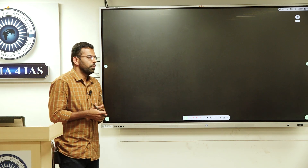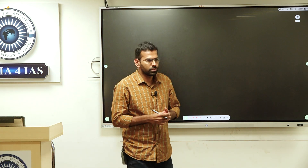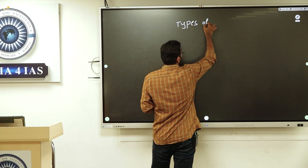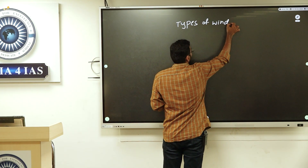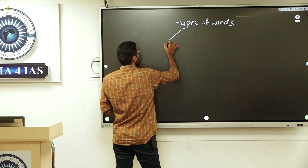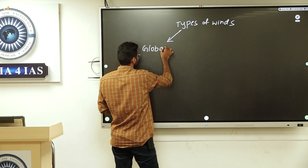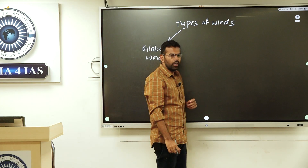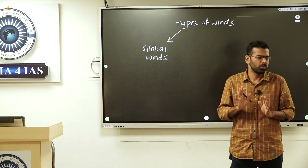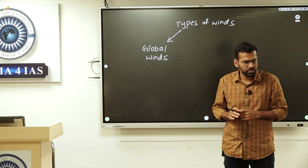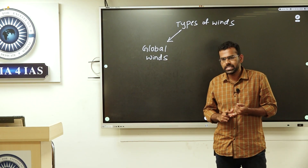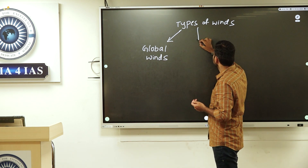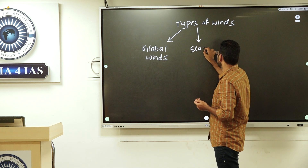We generally divide winds into three types. The first type is global winds — these winds blow across the earth based on latitudes or pressure belts. Your tropical easterlies, westerlies, and polar easterlies are global winds.